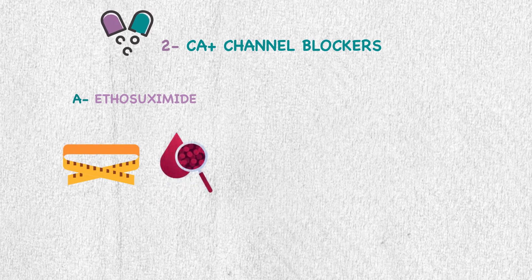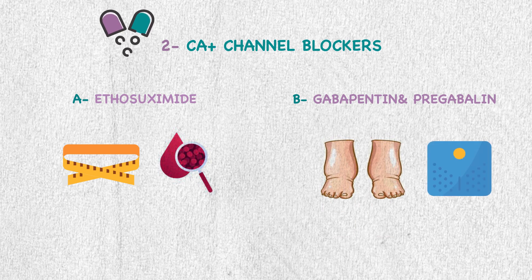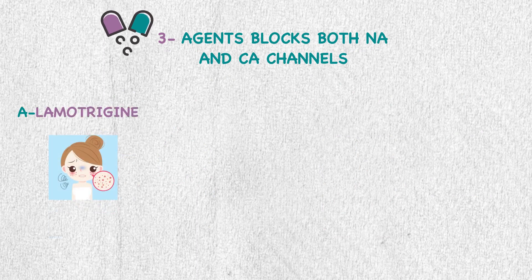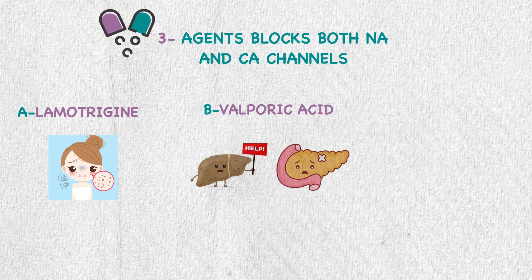Gabapentin and pregabalin also enhance GABA action and can cause peripheral edema and weight gain. The third group blocks both sodium and calcium channels: lamotrigine can cause serious skin reactions including Stevens-Johnson syndrome, and valproic acid has a black box warning for hepatotoxicity and pancreatitis. Topiramate also antagonizes glutamate receptors.